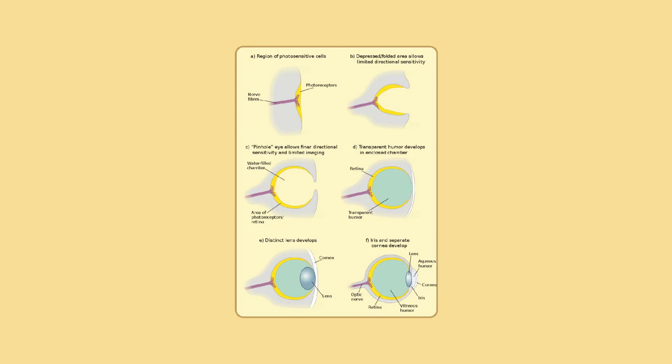The adjustment to close-range vision involves three processes to focus an image on the retina. When a creature with binocular vision looks at an object, the eyes must rotate around a vertical axis so that the projection of the image is in the center of the retina in both eyes. To look at a nearby object, the eyes rotate towards each other (convergence), while for an object farther away they rotate away from each other (divergence). Lenses cannot refract light rays at their edges as well as closer to the center, so the image produced by any lens is somewhat blurry around the edges — spherical aberration.